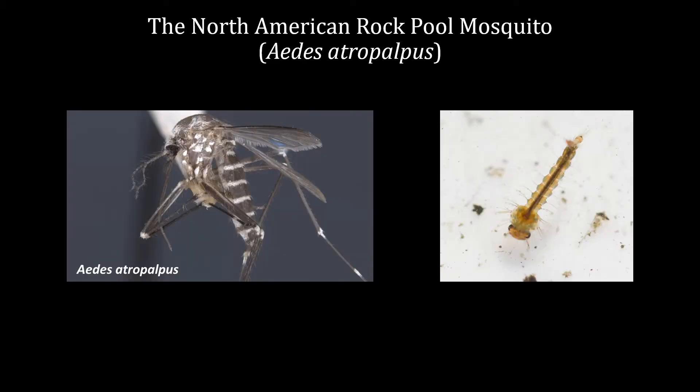The majority of the work that I do in rock pools is focused on North American rock pool mosquitoes. As the name suggests, they are rock pool specialists, using the pools as habitat for their aquatic larvae to develop in. They are somewhat atypical mosquitoes in that they don't actually need to bite and draw blood in order to lay their eggs. This makes them not only really convenient model organisms for studying, but it also means they are not typically thought of as vectors for disease.